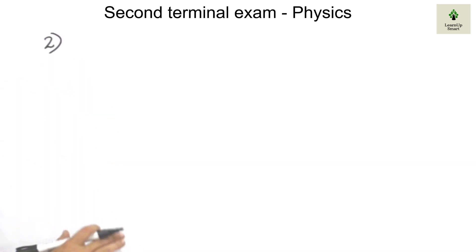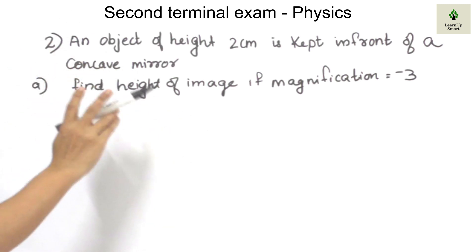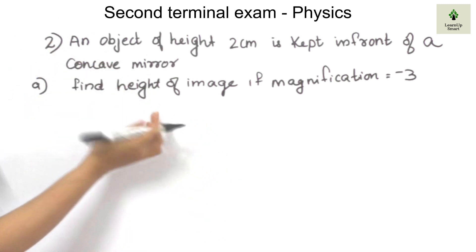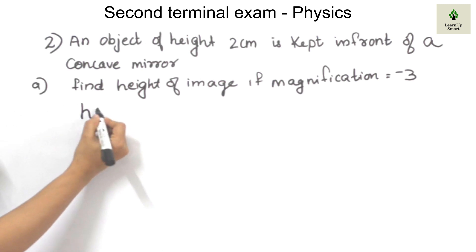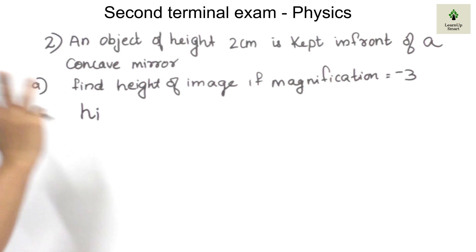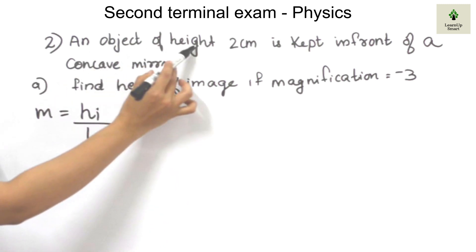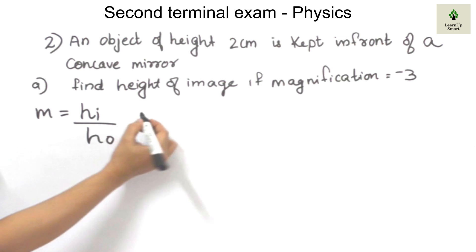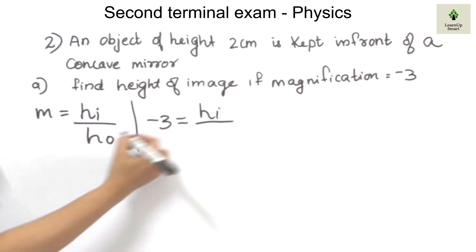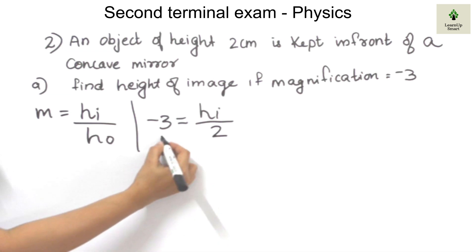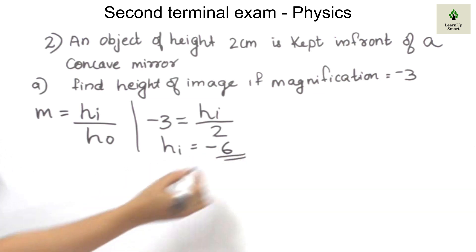Now, mirrors and spherical mirrors — it's very important to ask that question. An object of height 2 cm is kept in front of a concave mirror. We are looking at the height of the image. Magnification is equal to minus 3. Magnification equals hi divided by ho. The height of object is 2 cm. So, hi equals minus 3 multiplied by 2, which is minus 6.